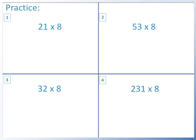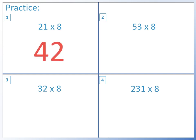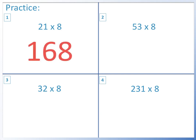Here are some practice questions for you to try. Please pause the video and have a go. Question 1: 21 times 8. Double it equals 42. Double it equals 84. Double it again equals 168.